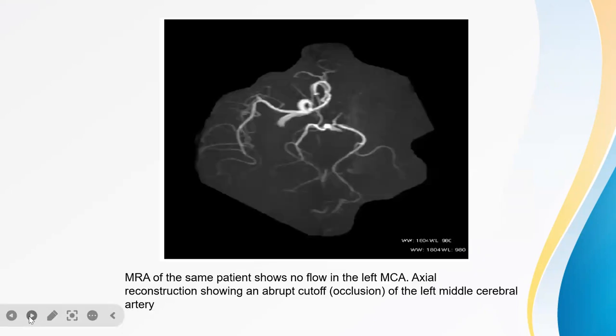This is an MR image of the same patient showing no flow in the left MCA. And this is an axial reconstruction showing an abrupt cutoff or occlusion of the left middle cerebral artery.